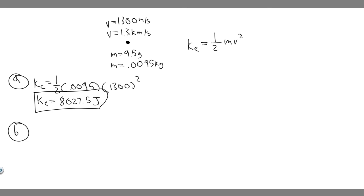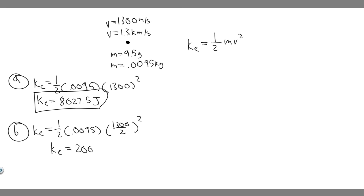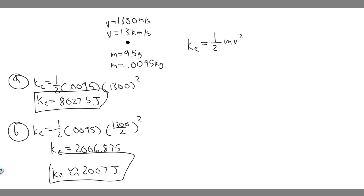For B, we're solving for the kinetic energy if the speed is halved. So instead of 1,300, we divide by 2. That gives us one-half times 0.0095 times (1,300 divided by 2) squared — so 0.5 times 0.0095 times 650 squared. The kinetic energy equals 2,006.875, which we'll round to 2,007 joules.